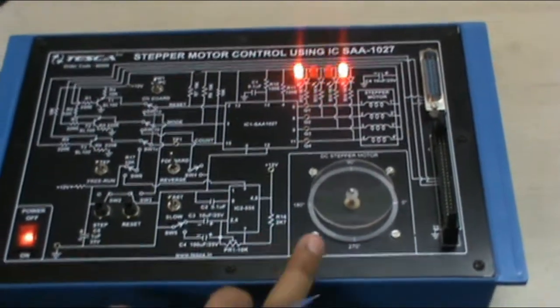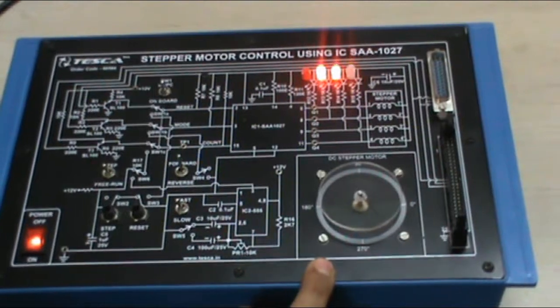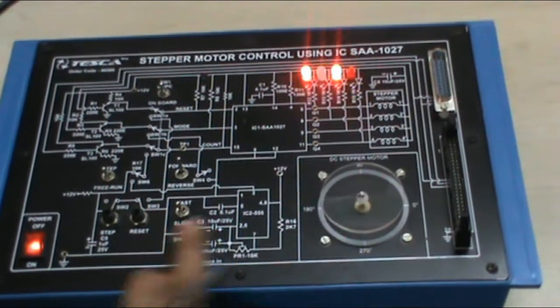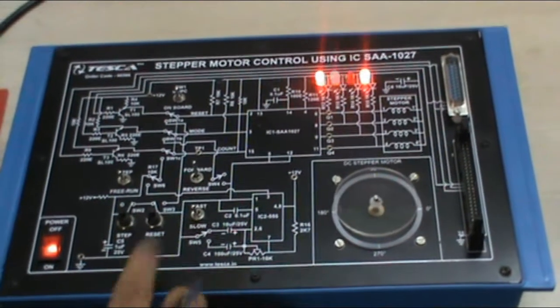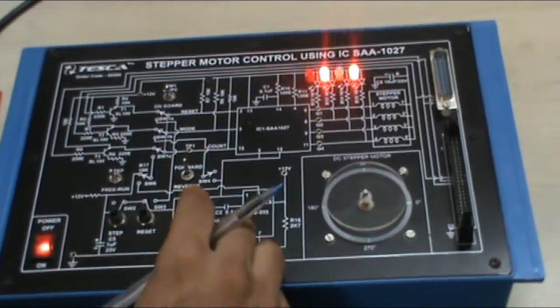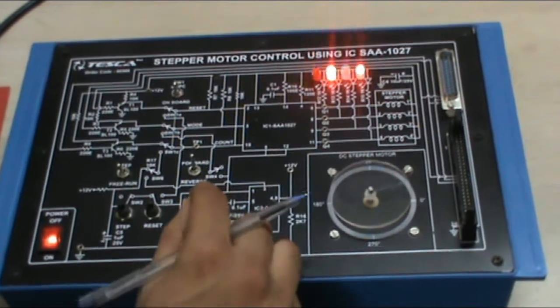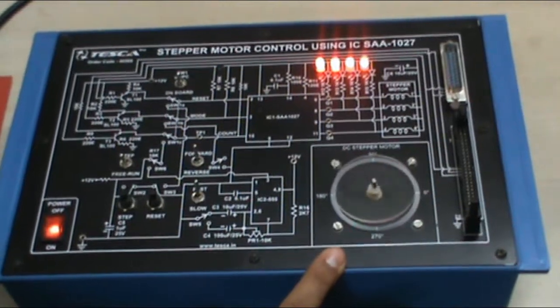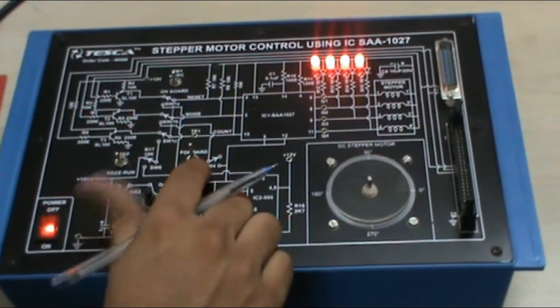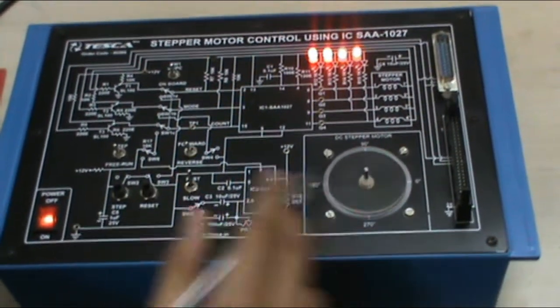You can see this is a stepper motor indicator. You can see the motor is running slowly in the forward direction and it's a free run. Now as we convert the SW5 switch to fast, the motor will move fast. As you can see, this is the forward and reverse button. If we switch it to reverse, it will move in the reverse direction.